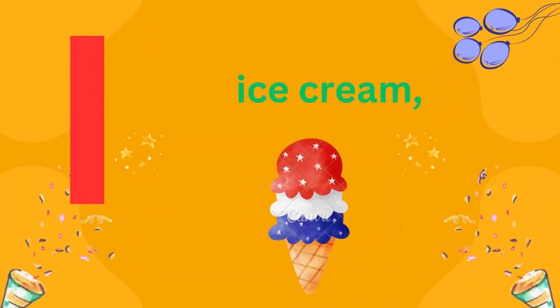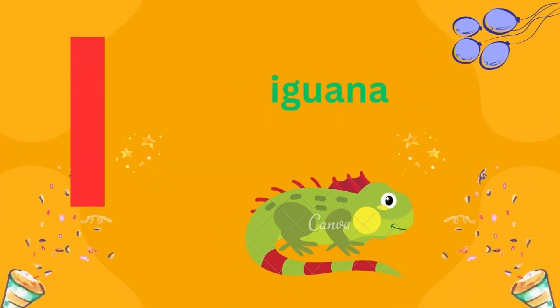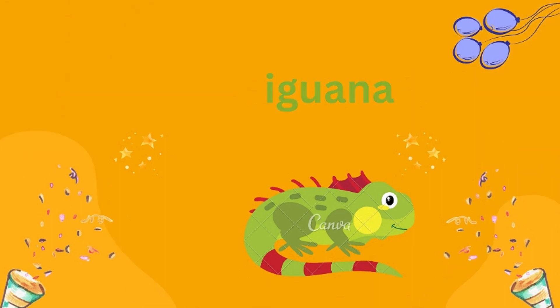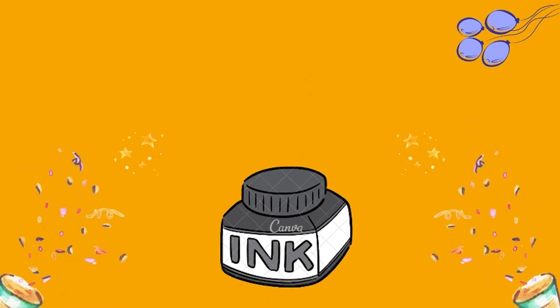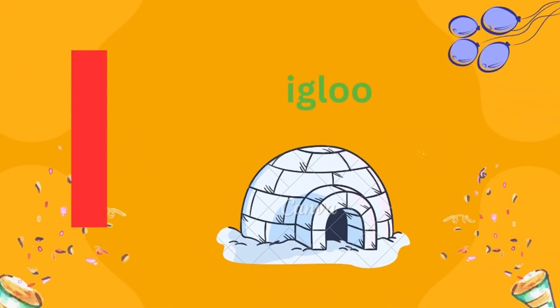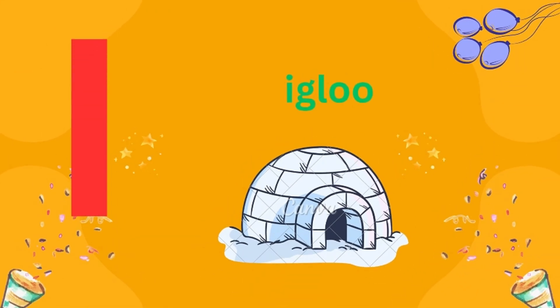V is for ice cream. V is for iguana. V is for egg.